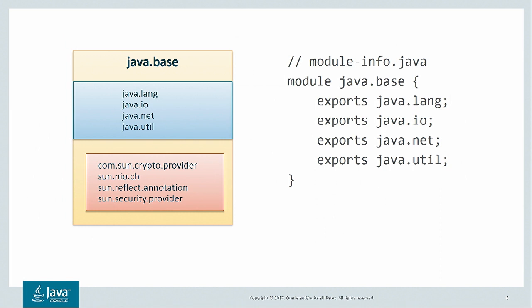A module is declared in a new kind of file called module-info.java. It gives the name of the module and its exported packages. By exporting the java.lang package, it means that the public classes of java.lang are accessible from outside java.base. A package that is not explicitly exported, such as com.sun.crypto.provider, is concealed — its public classes are not accessible outside java.base. This is the first feature of modules in JDK 9: strong encapsulation. A module is a set of exported packages and concealed packages.